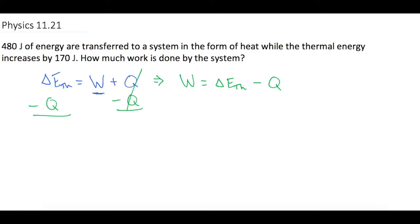Let's list what we know. We know that the change of thermal energy is 480 joules because they say 480 joules of energy are transferred to the system, so we're adding 480 joules in the form of thermal energy or heat.